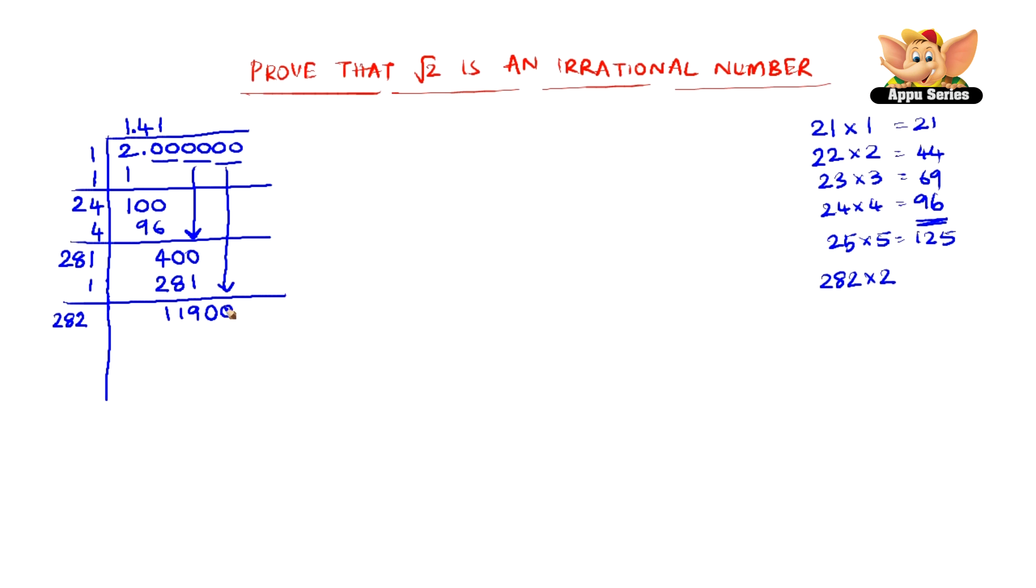So that gives us 11900. Now the number that is appropriate to be multiplied with is 4, because multiplying 2822 into 2 gives us a very smaller number than 11900. So the closest to 11900 can be obtained when we multiply 2824 into 4 that gives us 11296. So subtracting 11900 and 11296 we get 604, and add 4 here so we get 2828.